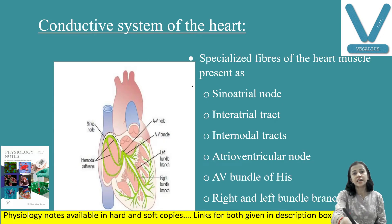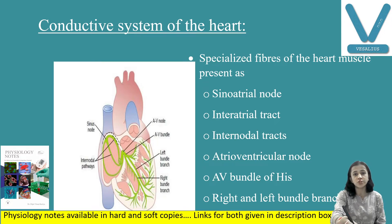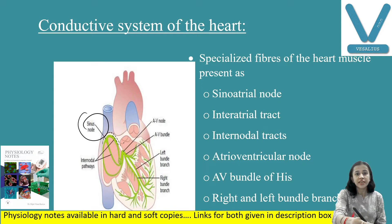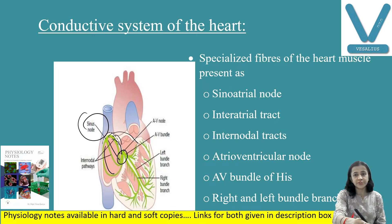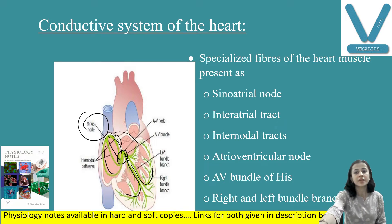The conducting system of the heart consists of specialized fibers: the SA node, interatrial track, internodal track between SA node and AV node, the atrioventricular node, AV bundle — also known as bundle of His — and the right and left bundle branches.